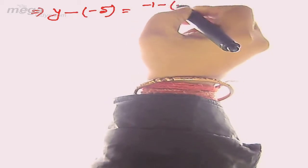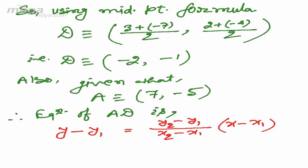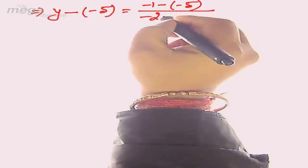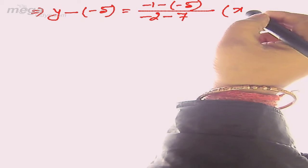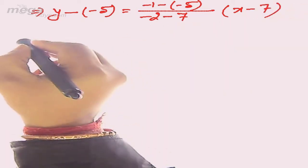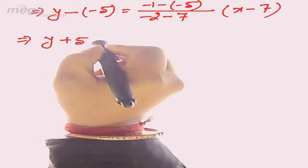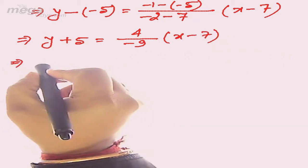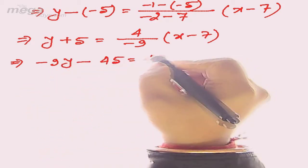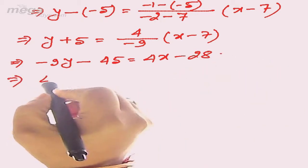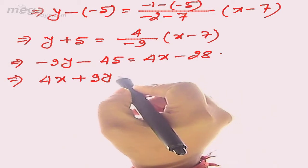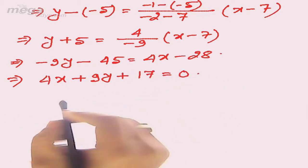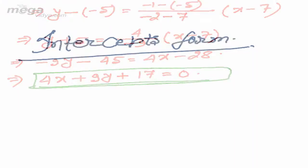Substituting the values: y - (-5) = [(-1 - (-5)) / (-2 - 7)] × (x - 7). This simplifies to y + 5 = (4 / -9)(x - 7), then -9y - 45 = 4x - 28. Hence the equation of the median is 4x + 9y + 17 = 0.